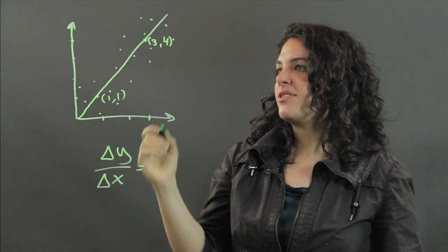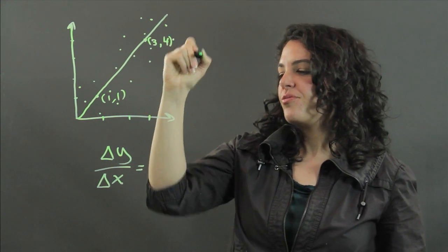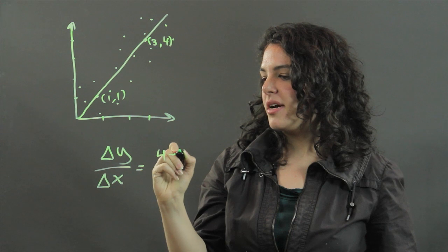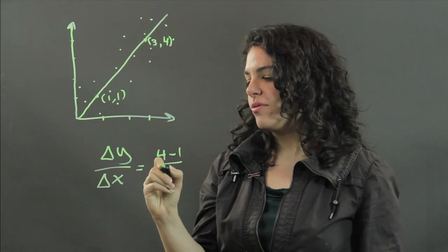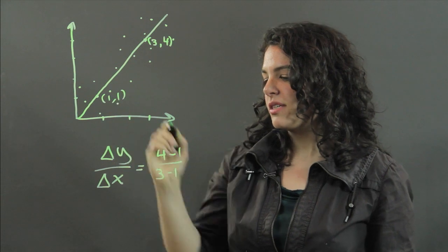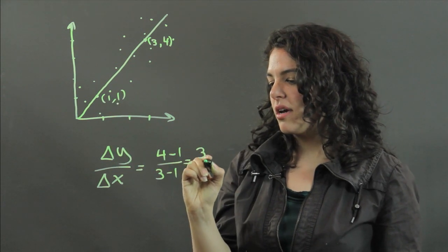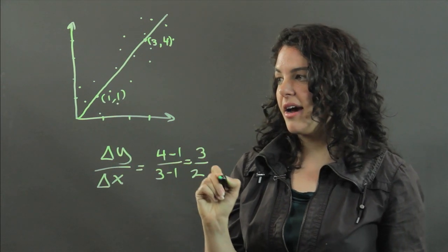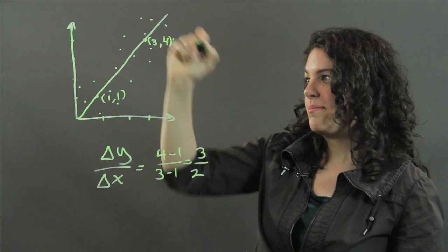You would find the difference in y. So you do four minus one over three minus one. This is your difference in your x values, and you would get three halves is the slope of this line of best fit.